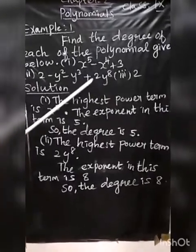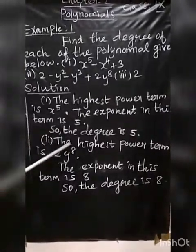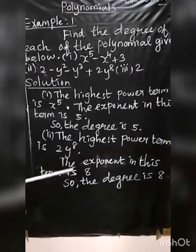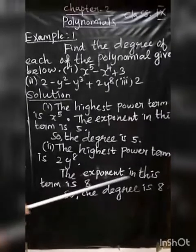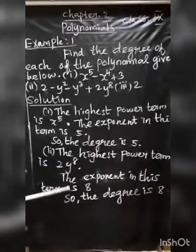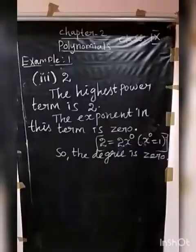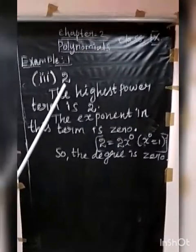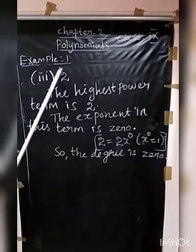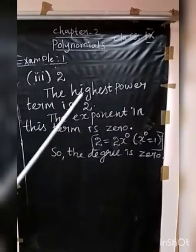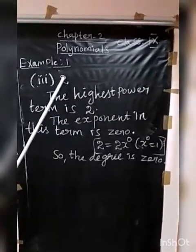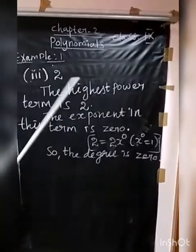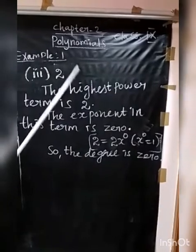The highest power term is 2Y Power 8 and the exponent in this term is 8, so the degree is 8. For the third sum, which is just the constant 2, there is no variable, so we only write the highest power term as 2.